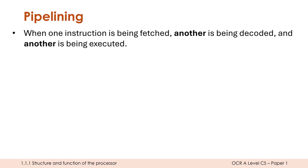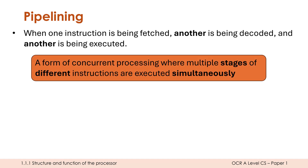So how does pipelining manifest inside a CPU? When one instruction is being fetched, another is being decoded, and another is being executed simultaneously. If asked to explain how pipelining works, that is your key point. The formal definition is: pipelining is a form of concurrent processing where multiple stages of different instructions are executed simultaneously.